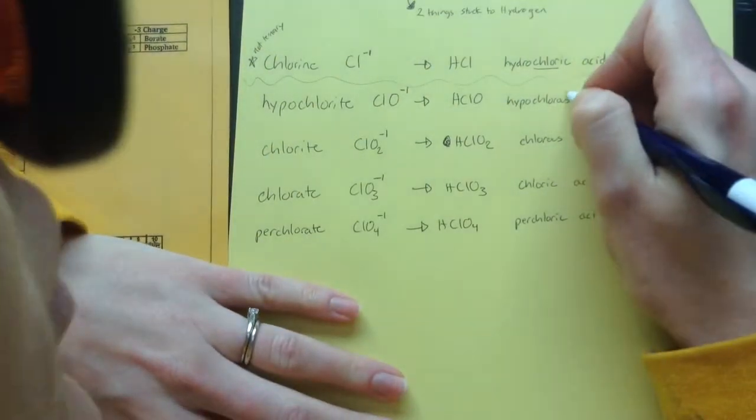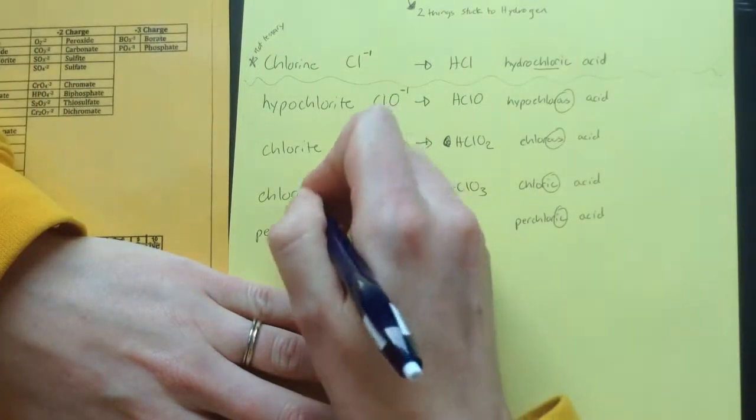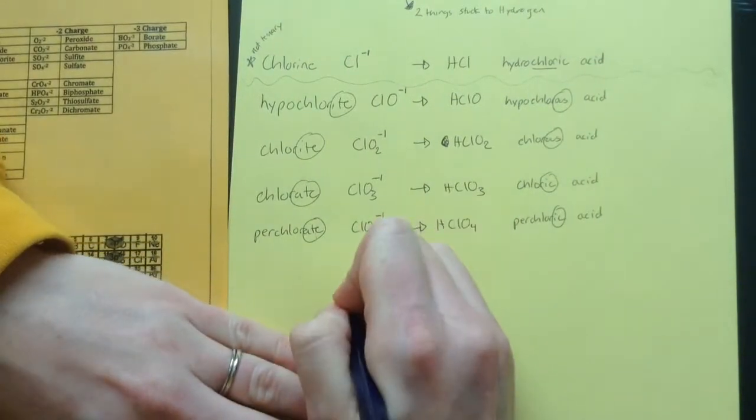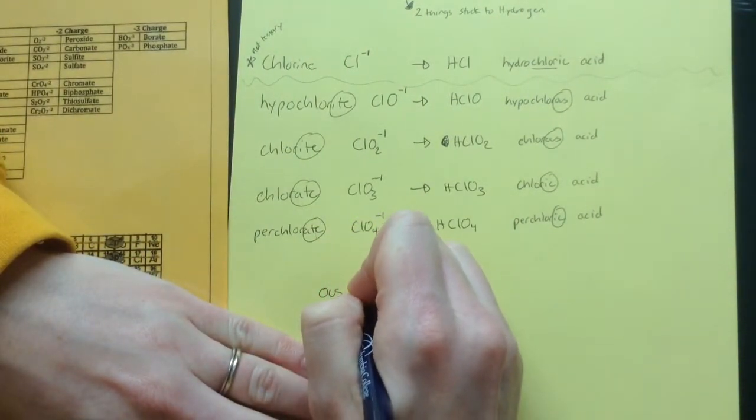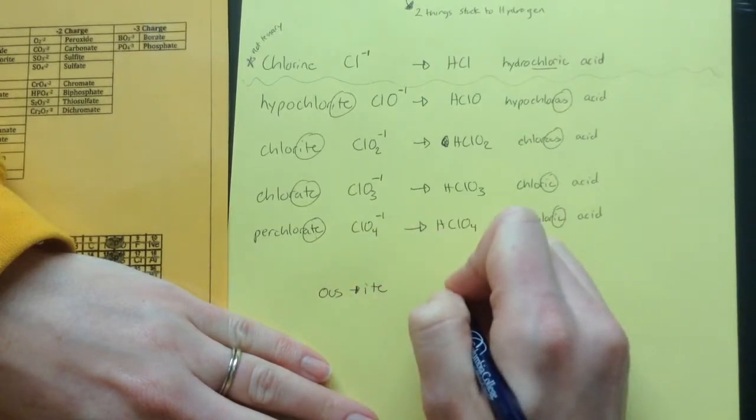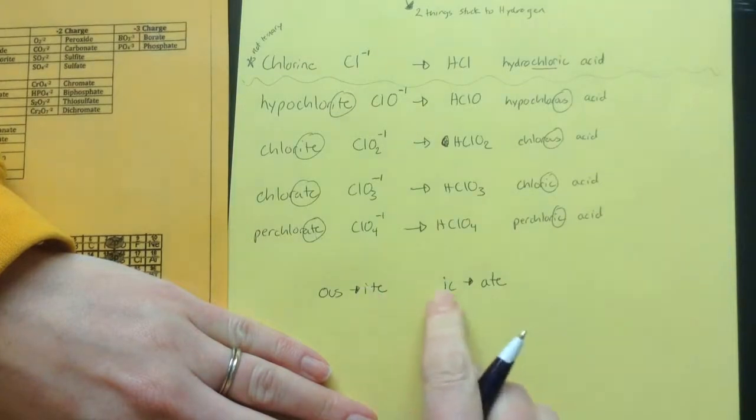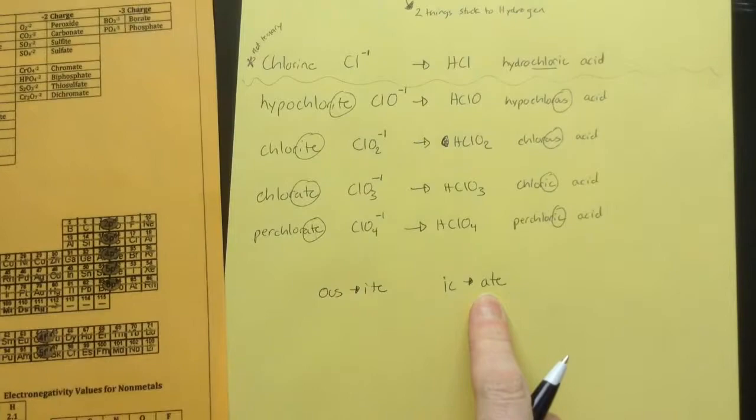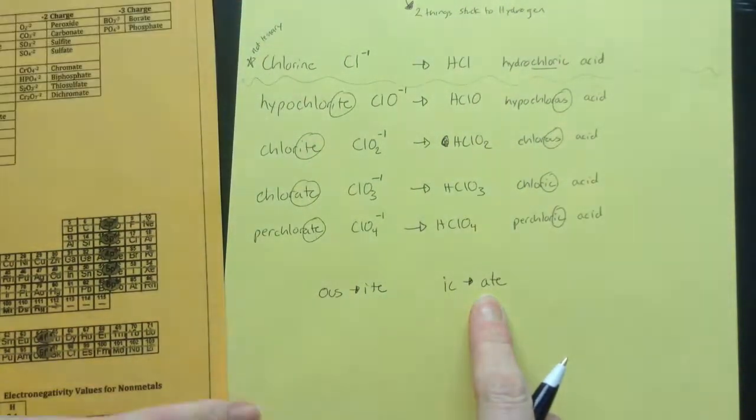Notice that all we changed was the end. And these were all ate, and these were ite, and the ites become ous. Ous goes with ite, and ic goes with ate. It helps they kind of don't go together with the i's there. Ous says ite, ate says ic. Hydroic comes from ide, this was chlorine, and it was ide.